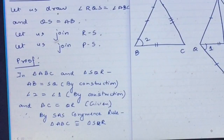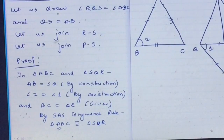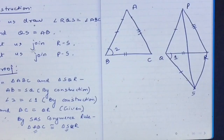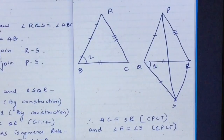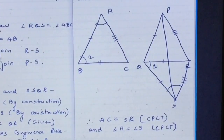Since triangle ABC is congruent to triangle SQR, all parts of triangle ABC are equal to the corresponding parts of triangle SQR. Therefore, side AC is equal to side SR, and angle A is equal to angle S. This is by CPCT — corresponding parts of congruent triangles.